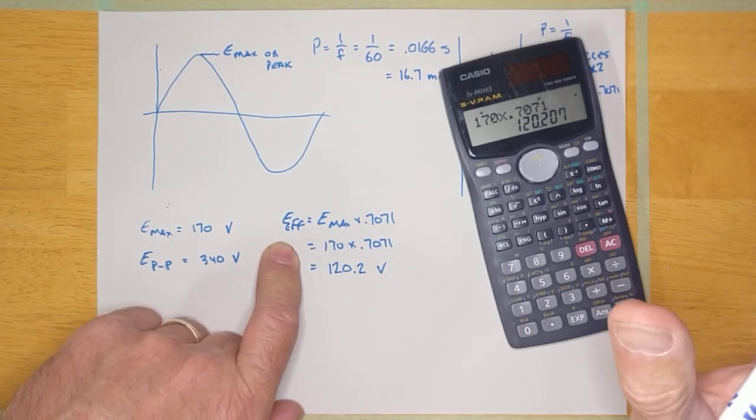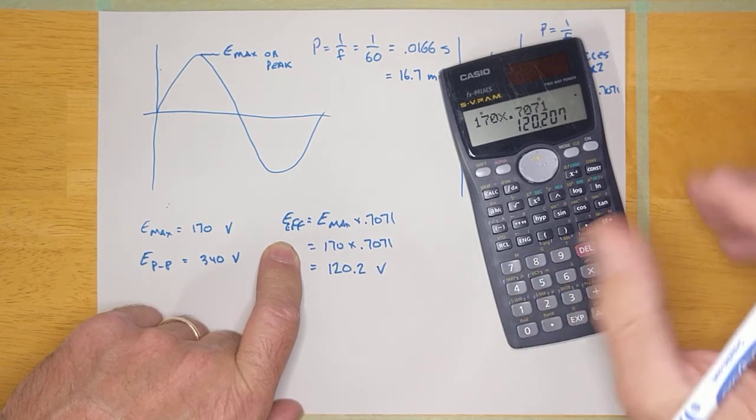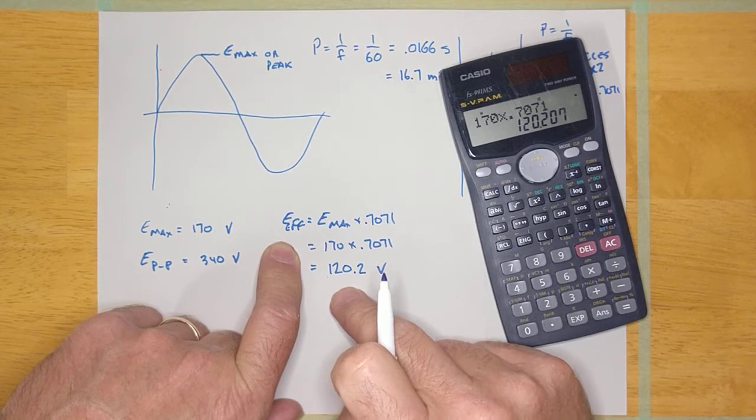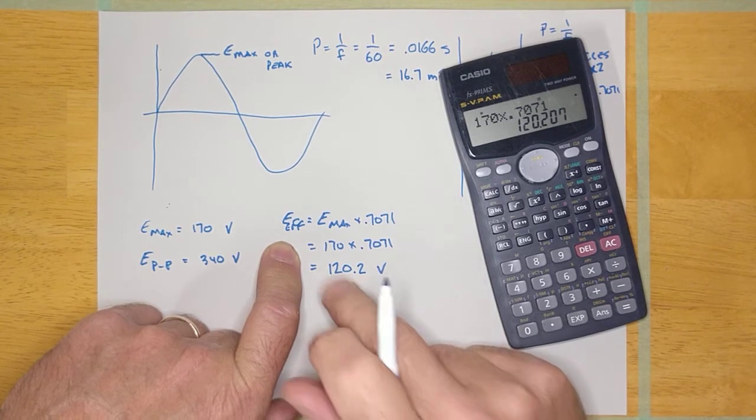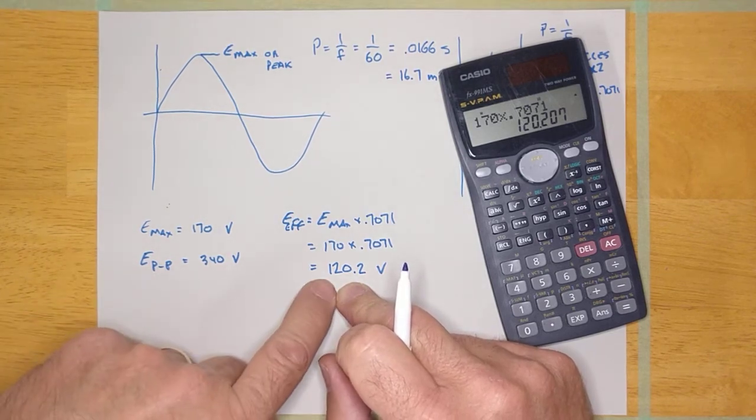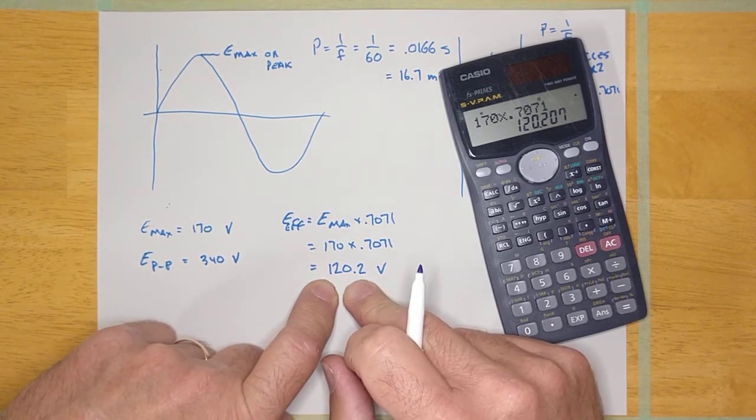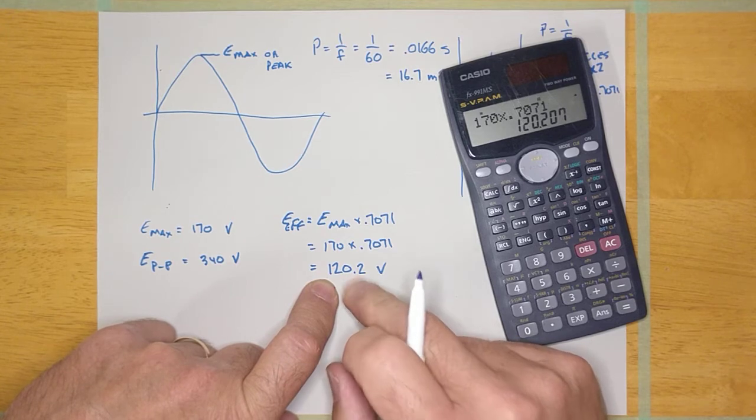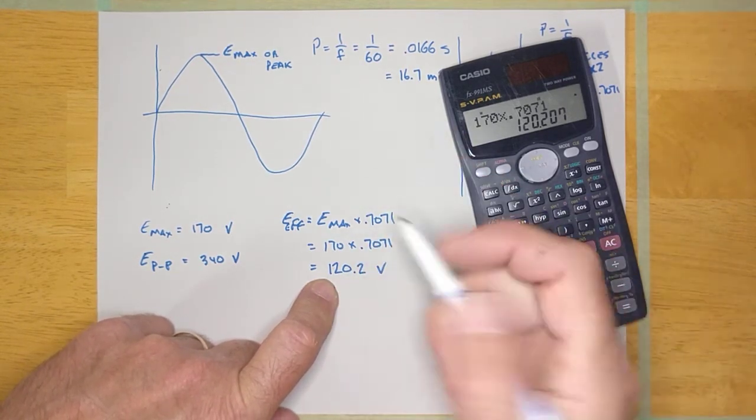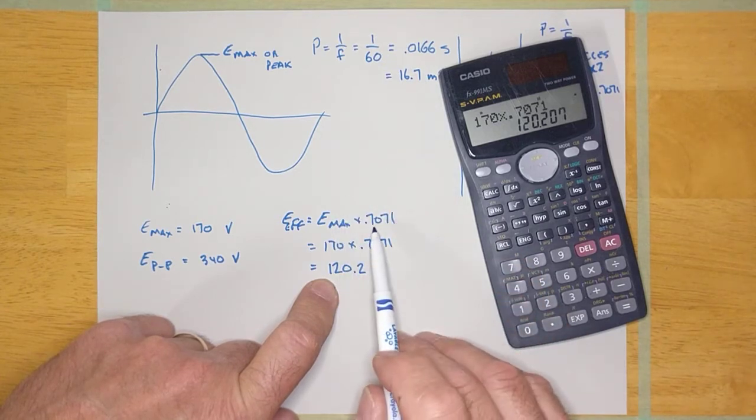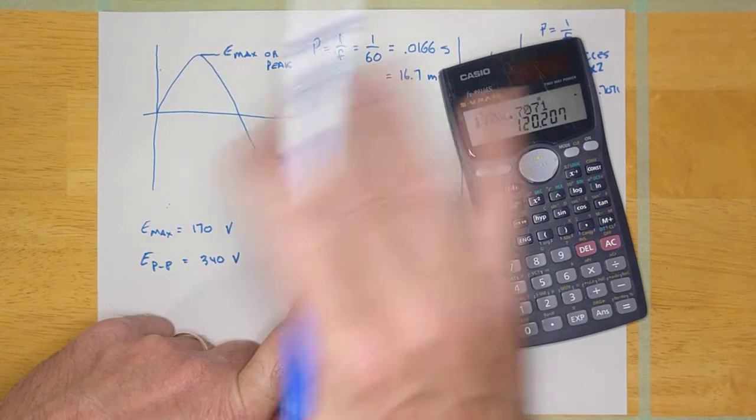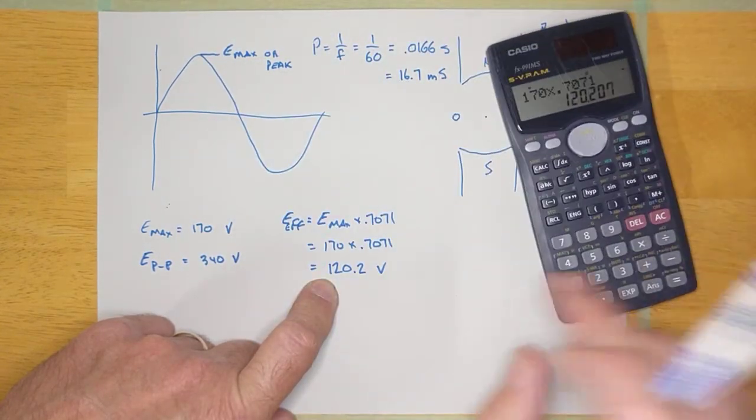Again, a digital multimeter, if you set it to AC, is calibrated to measure 120 volts. And what that means is if I go to any receptacle in my house and measure 120 volts with my digital multimeter on it, that means the waveform that's coming out of that plug is going to have a peak voltage of very close to 170 volts. And that's just the way it is.